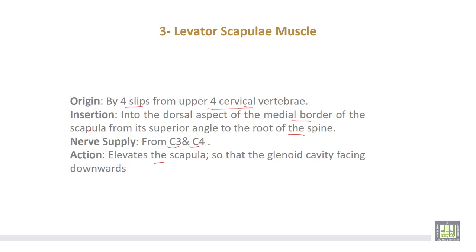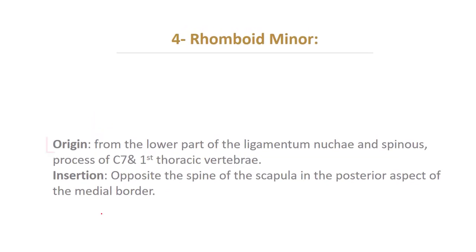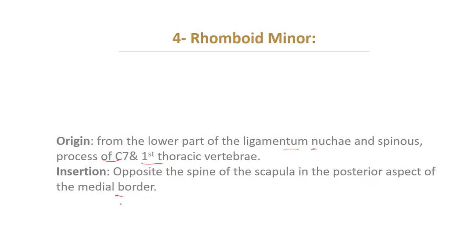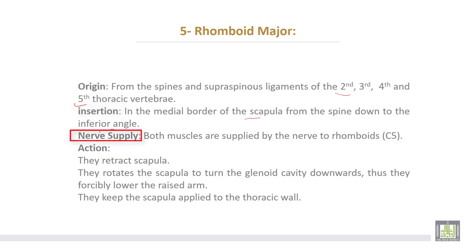Rhomboids minor takes origin from the lower part of the ligamentum nuchae and spinous process of the seventh cervical and first thoracic vertebrae. It inserts opposite the spine of the scapula on the posterior aspect of the medial border. Rhomboids major takes origin from the spines and supraspinous ligaments of the second, third, fourth, and fifth thoracic vertebrae. It inserts into the medial border of the scapula from the spine down to the inferior angle.